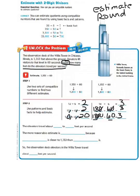we know that 18 divided by 6 equals 3. We have a zero that cancels each other out, and we have one zero left that we add to the end of our quotient. So the elevators travel about 20 to 30 feet per second.